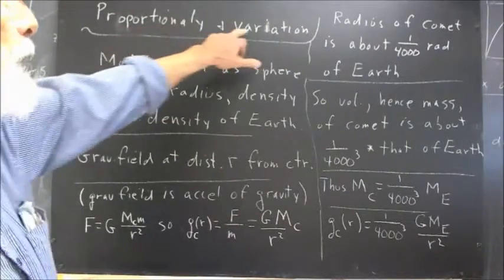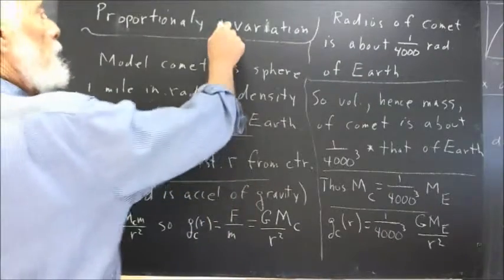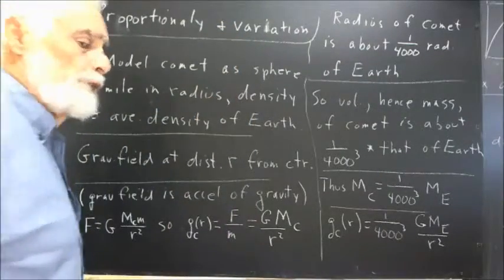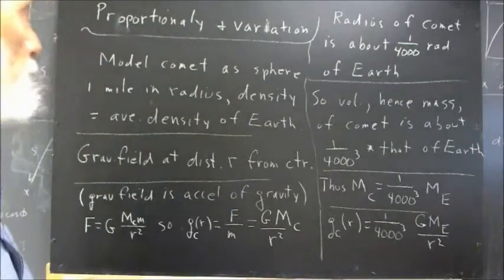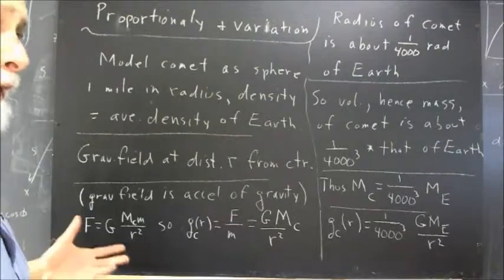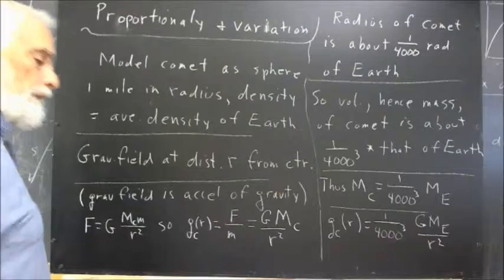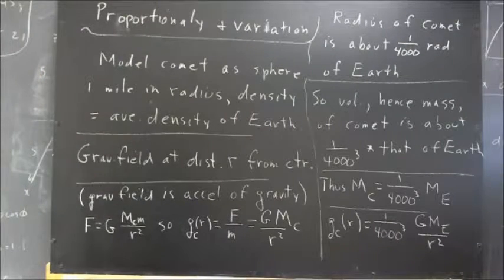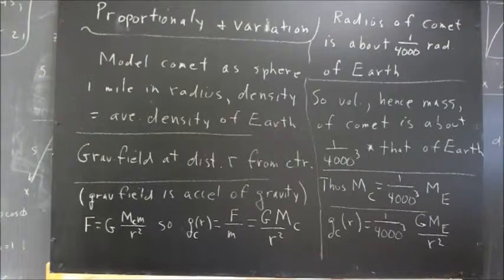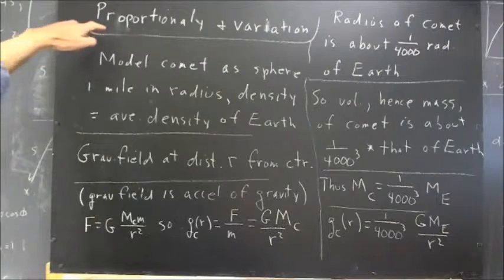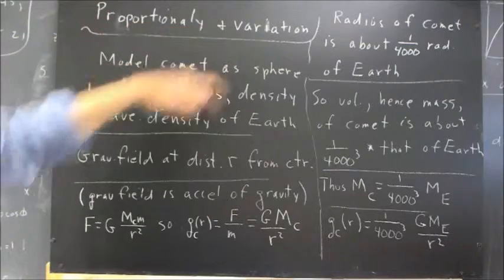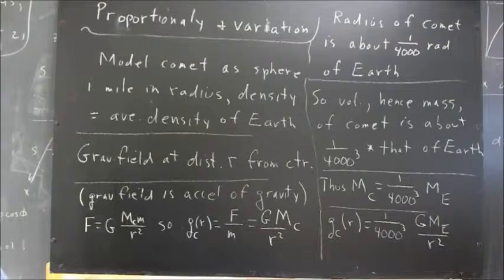We're going to apply proportionality and variation to the recent landing of the Rosetta Probe on the comet whose name I can't pronounce, although I'm familiar with some of those words. One of them is Russian. Okay, proportionality and variation applied to this situation.